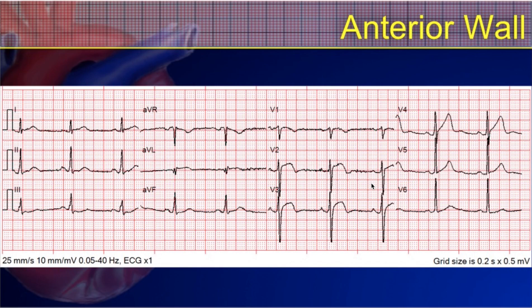Here's an anterior wall infarction. Where do you expect to see those changes? Labeling the ECG: 2, 3, and AVF are inferior; 1 and AVL are lateral; V1 and V2 are septal; V3 and V4 are anterior; V5 and V6 are also lateral. If I tell you that changes in V3 and V4 are indicative of acute myocardial infarction, you would say that's an anterior wall infarct. You may also see a little bit of change in the septal wall, and a lot of times they do go together — giving you an anterior septal infarct.